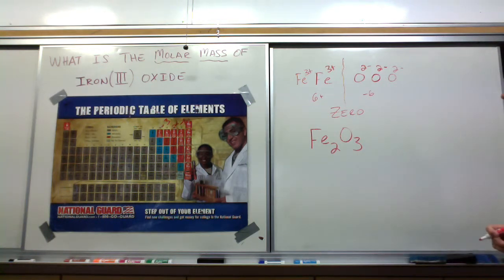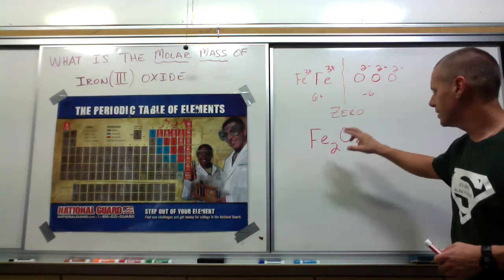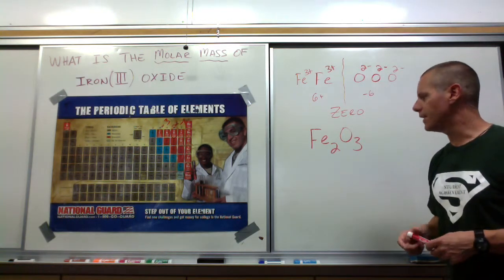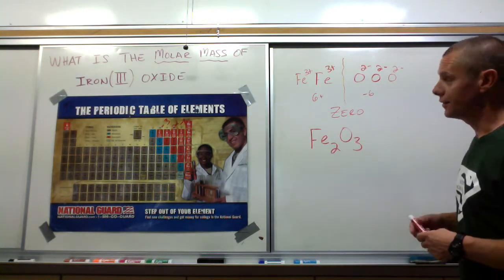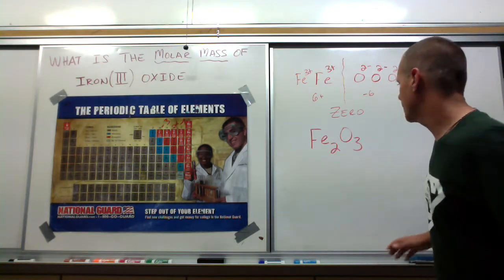The formula for iron 3 oxide is 2 of these and 3 of these, a neutral compound. We needed this because now we know that we need to add 2 irons to 3 oxygens. Together, that would be the molar mass of iron 3 oxide. Let me continue.